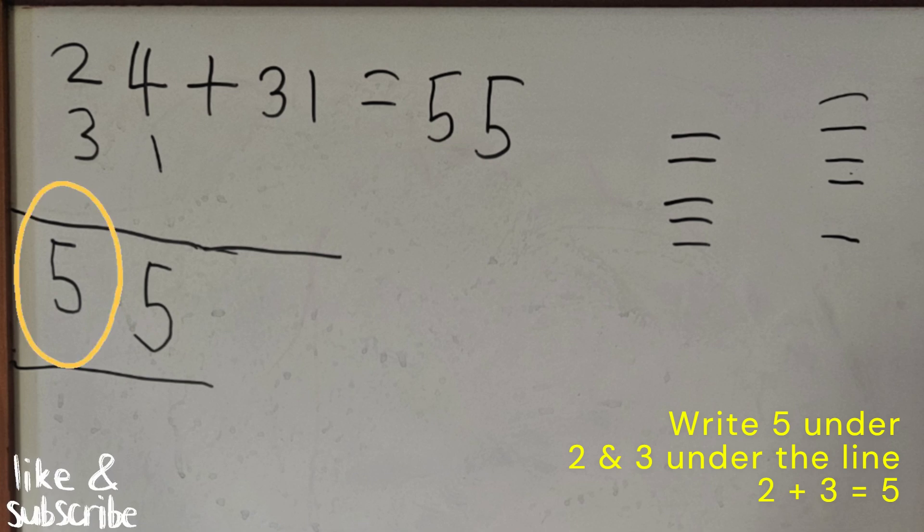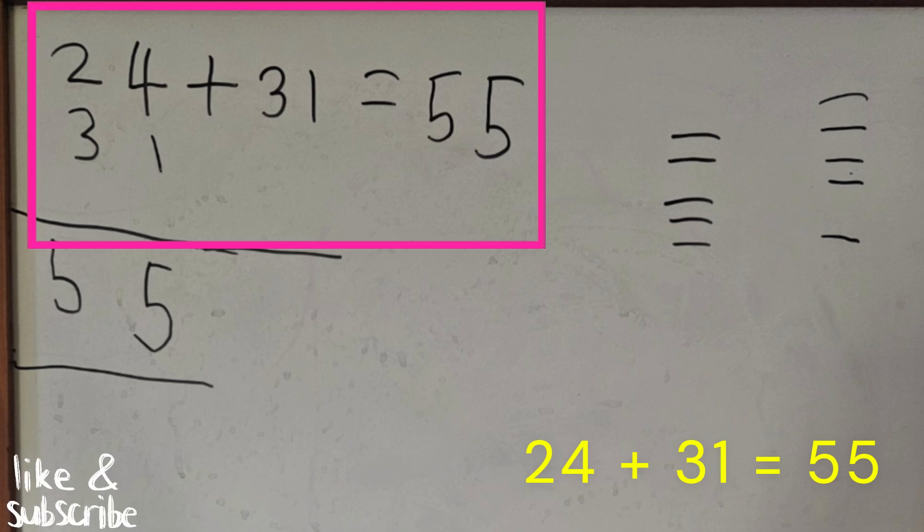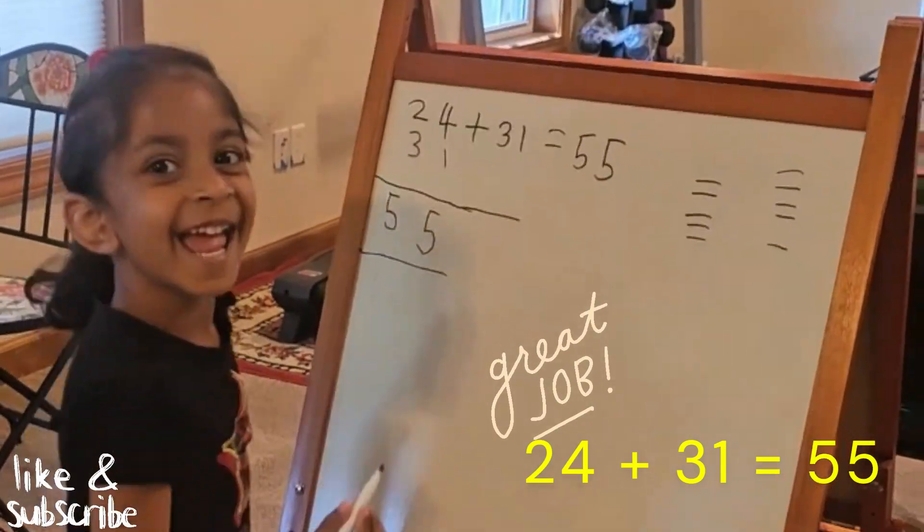2 plus 3 equals 5. So 24 plus 31 equals 55. Great video. Yay! Yay!